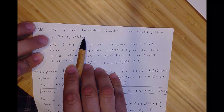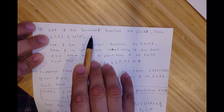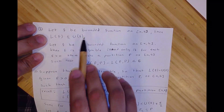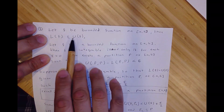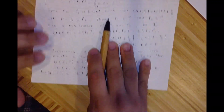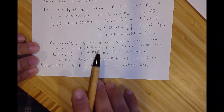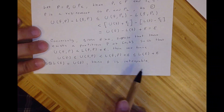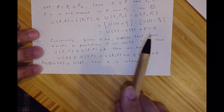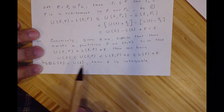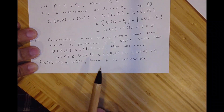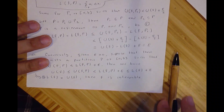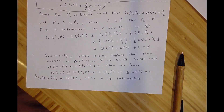By property two — which states that the lower integral of F is less than or equal to the upper integral of F — and since the upper integral is also less than or equal to the lower integral plus epsilon for any epsilon, the two must be equal. Therefore F is integrable, completing both directions of the proof.